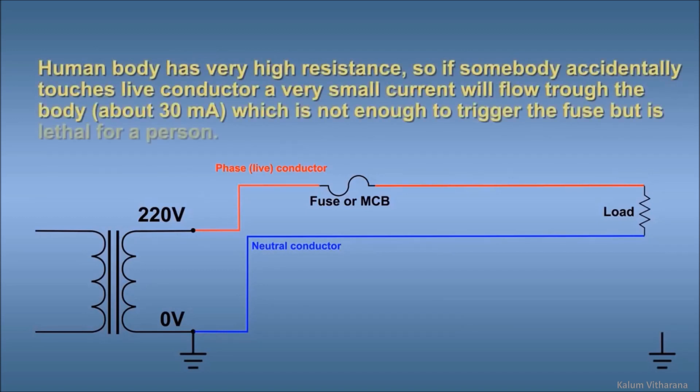The human body has very high resistance, so if somebody accidentally touches a live conductor, a very small current will flow through the body, about 30 milliamps. That is not enough to trigger a fuse but is lethal for a person.